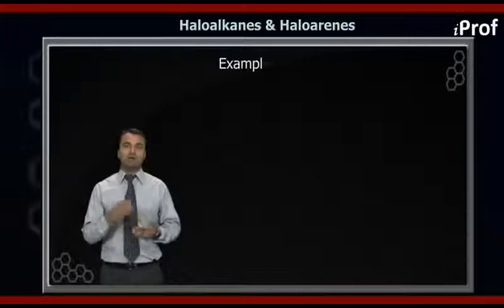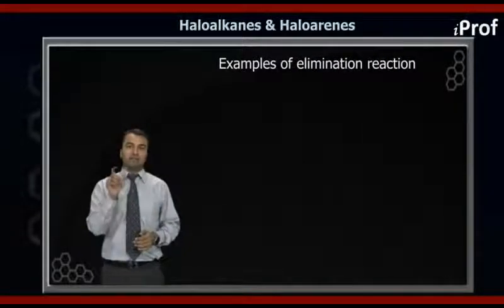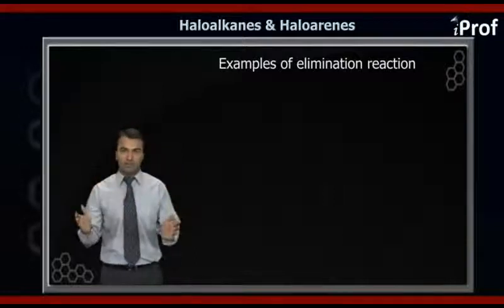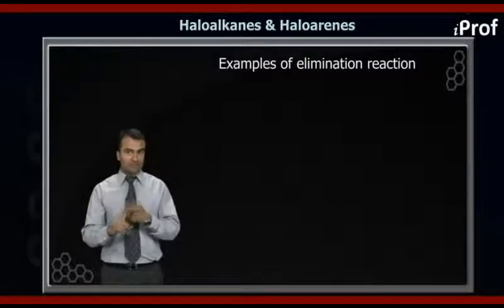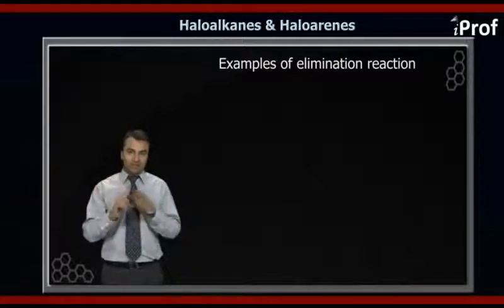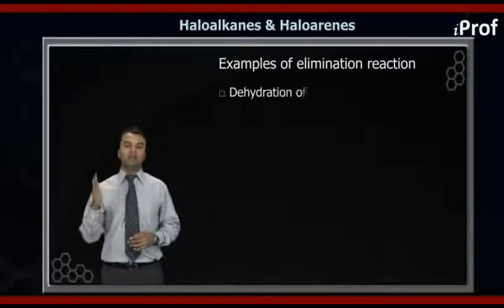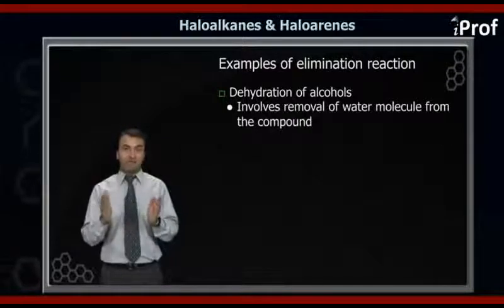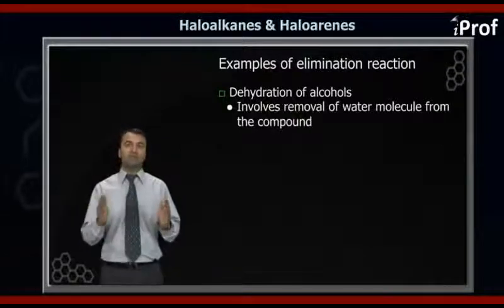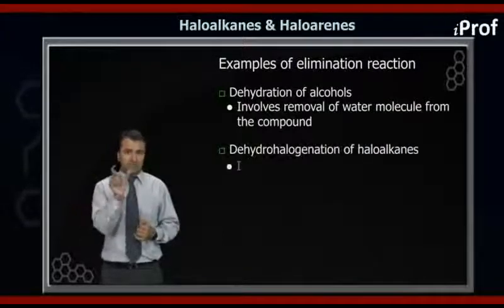Let us discuss some examples of elimination reaction. Elimination reaction, as I have told you in the layout of the reaction mechanism, is shown by halolcanes — that is RX — as well as by alcohols, that is ROH. The reaction shown by alcohols is known as dehydration of alcohols, whereas the reaction shown by RX, that is halolcanes, is known as dehydrohalogenation of halolcanes.